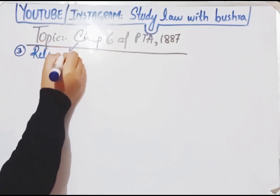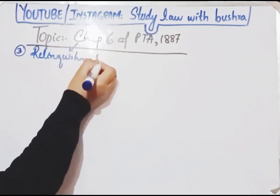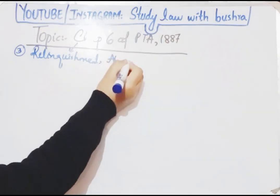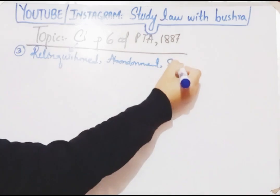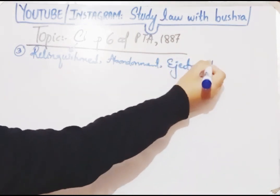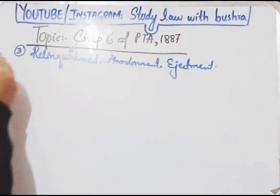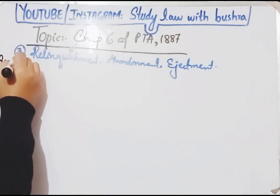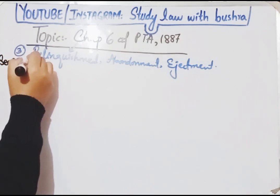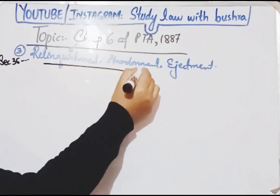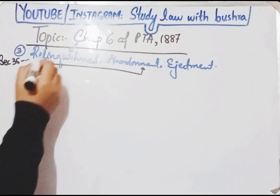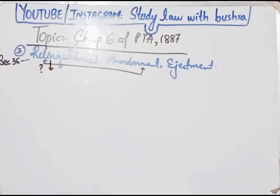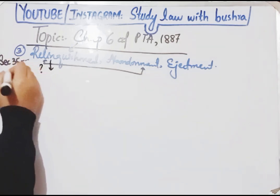Punjab Tenancy Act ke Chapter 6 ke andar teen cheezon ko discuss kiya gaya hai. Sabse pehli cheez jo discuss ki gayi hai wo hai relinquishment, second is abandonment, and third is ejectment. Ye teeno topics start hote hain section 35 se onwards. Is video mein hum pehle do topics — relinquishment aur abandonment — discuss karenge, aur next video mein ejectment discuss karenge.